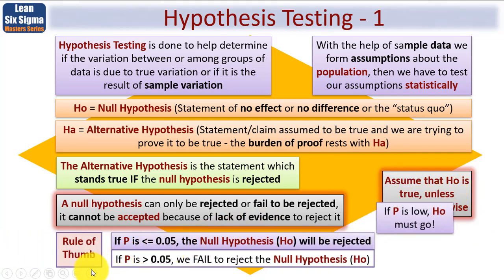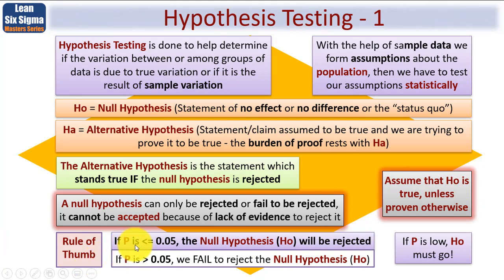Here's that again. Your rule of thumb, therefore, is if p is less or equal to 0.05, the null hypothesis will be rejected. Whereas if p is greater than 0.05, your 5%, we fail to reject the null hypothesis. So therefore, it's only if it's less than 5%, if p is low, H-O must go. And you're left with the alternate hypothesis, or H-A.